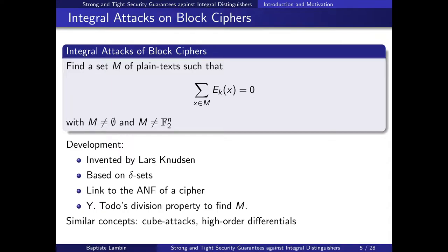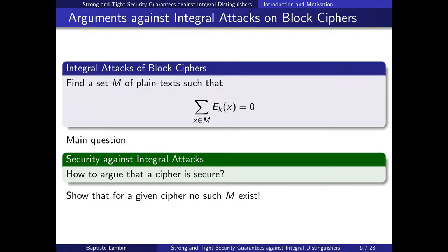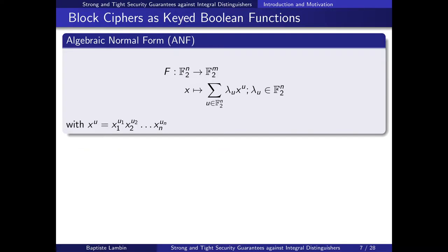There are links with the ANF of the cipher — the algebraic representation — and these days the most common way to study integral attacks is to consider division property, introduced by Yosuke Todo, to find this set M. The goal of integral attacks is to find the set M such that the sum is zero. To argue about the security of a block cipher against these attacks, we need to show that no such set M of plaintexts exists, which requires taking a closer look at how we can describe a block cipher.